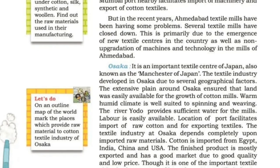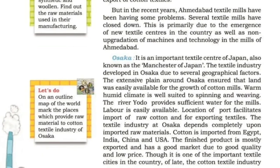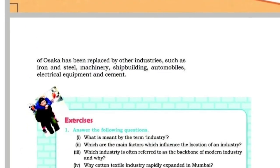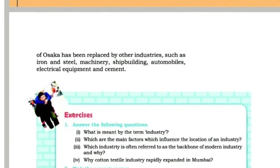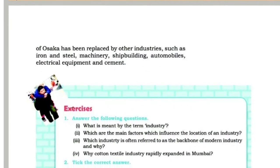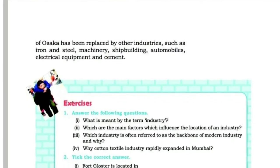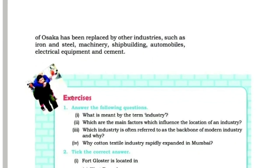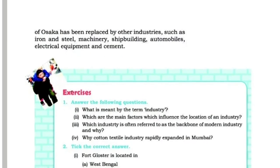Though Osaka is one of the important textile cities, the cotton textile industry of Osaka has been replaced by other industries such as iron and steel, machinery, shipbuilding, automobiles, electrical equipment and cement.